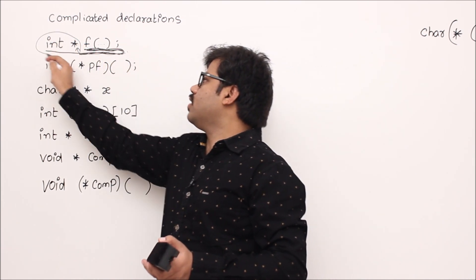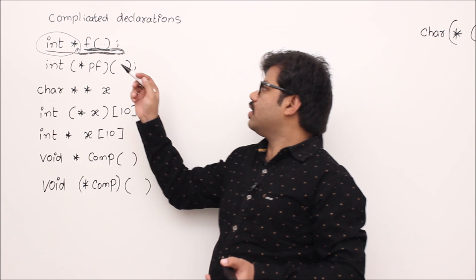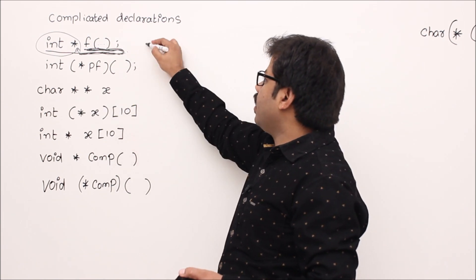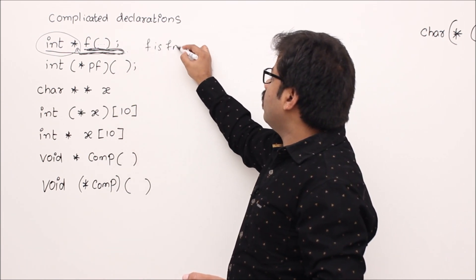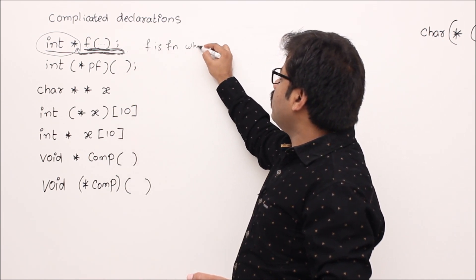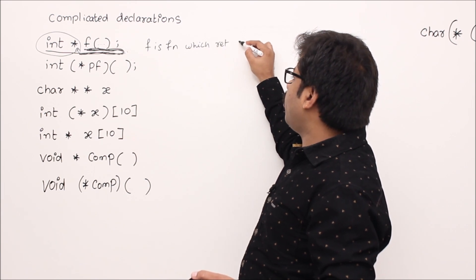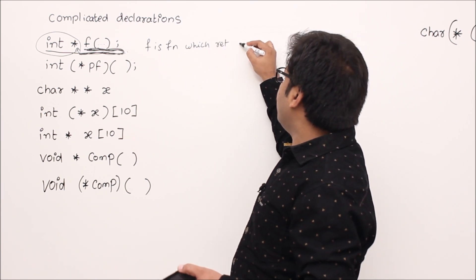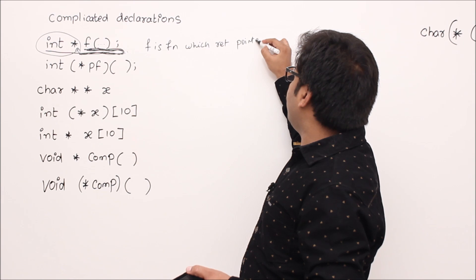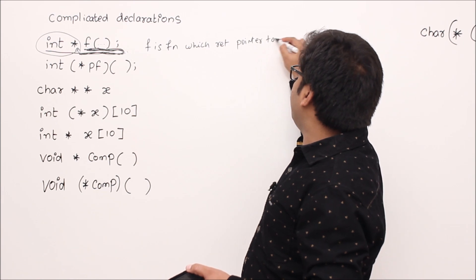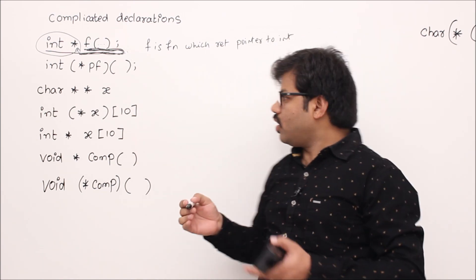So 'f is a function which returns' — what is that? An integer pointer. So f is a function which returns a pointer to int.